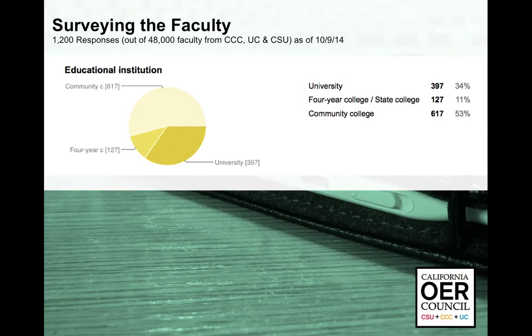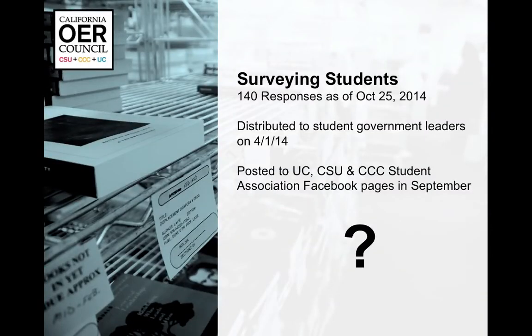When we surveyed faculty and sent out information, community colleges were most responsive as of October 9th. Four-year colleges and universities are divided: state colleges had an 11% return rate and universities — meaning the UCs — had a 34% return rate. For students it's more challenging, with only 140 responses as of October 25th, but we've established a Facebook campaign reaching out to students. If you can send the survey to your students, we would be very appreciative.